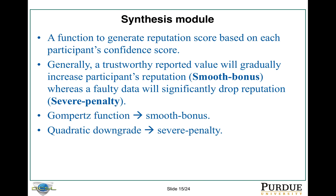For the sensor size module, it is a function to generate the reputation score based on each participant's confidence score. Generally speaking, the first property is a smooth bonus. So if a user reported reliable and trustworthy data, that user's reputation score will increase gradually. However, if a user reports faulty or wrong data, its reputation score should drop significantly. That's how a credit score works. For the smooth bonus property, we use the Gompertz function, and for the severe penalty, we quadratically downgrade the user's reputation when we see faulty data.